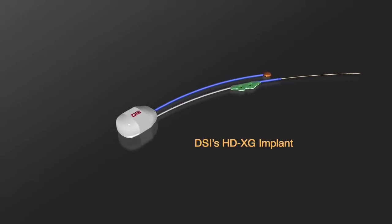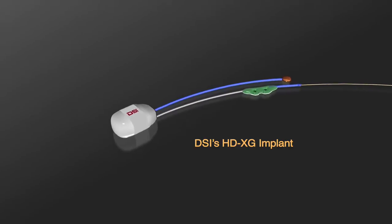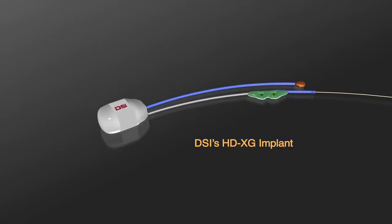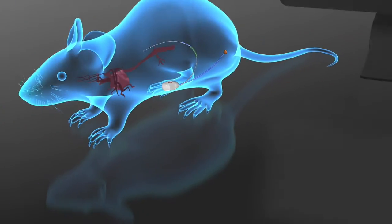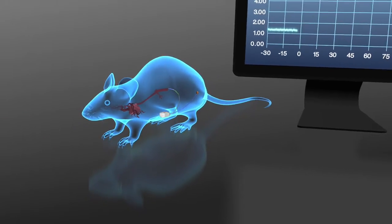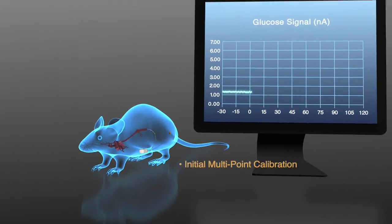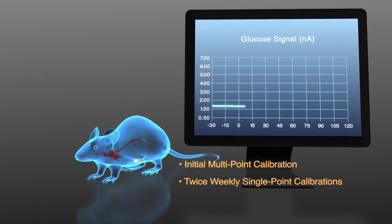The HDXG implant provides continuous measurements of blood glucose, temperature, and activity in laboratory animals. To ensure optimal performance, the HDXG must be calibrated using reference measurements over the course of a study.